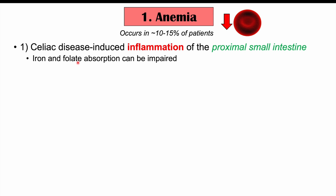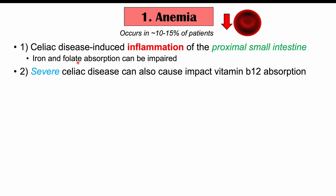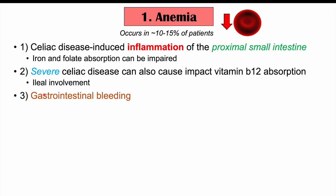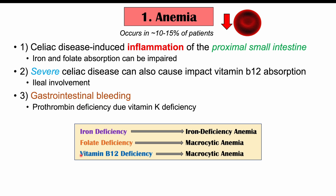A second cause of anemia can occur in severe cases where vitamin B12 absorption is impacted, involving the ileum — the last part of the small intestine — which is called ileal involvement. A third mechanism is gastrointestinal bleeding, due to a prothrombin deficiency, which itself results from a vitamin K deficiency. So the three main mechanisms for anemia in celiac disease are iron deficiency, folate deficiency, and vitamin B12 deficiency.